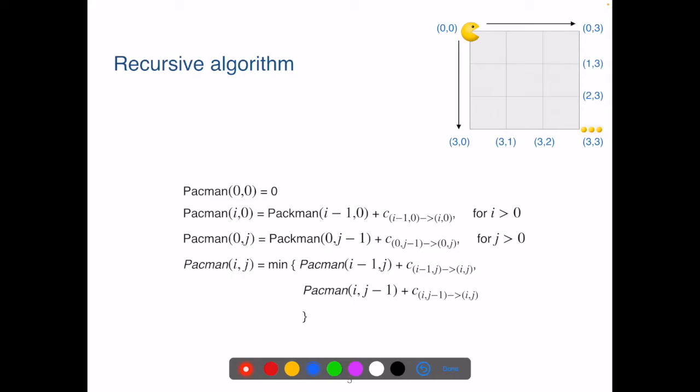So the complete recurrence relation and the base cases are here. When the destination is the location (0,0), the cost is also 0.